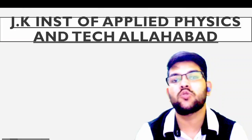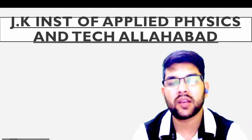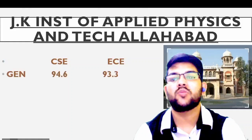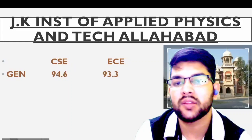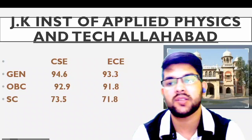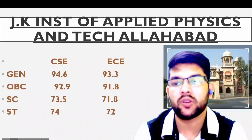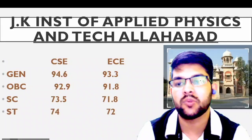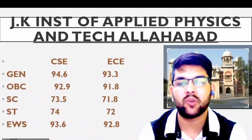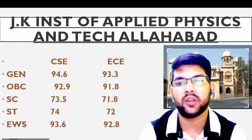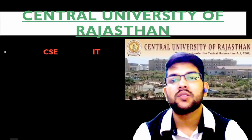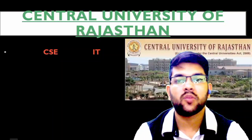Next is JKNS Institute of Applied Physics and Technology, Ahmedabad. For General: 94.6 and 93.3; OBC: 92.9 and 91.8; SC: 73.5 and 71.8; ST: 74 and 72; EWS: 93.6 and 92.8 percentile.